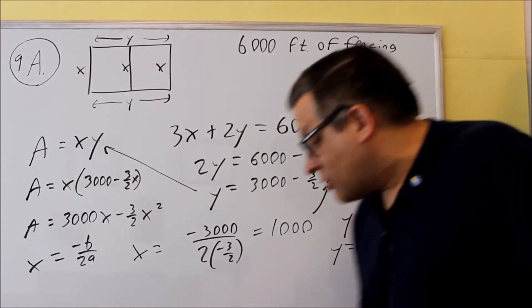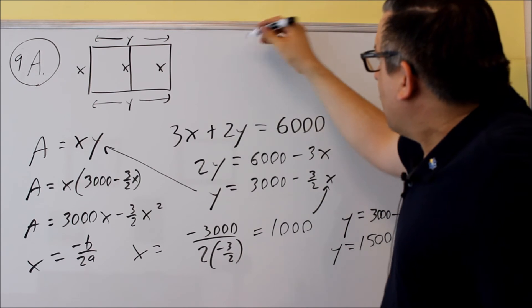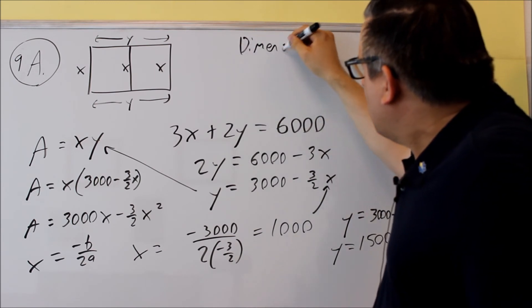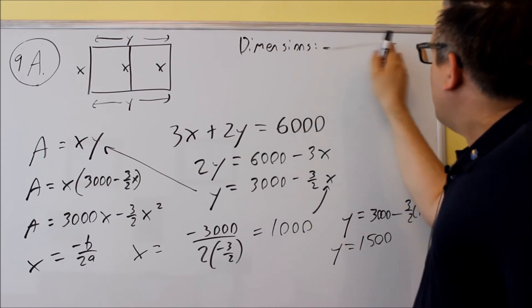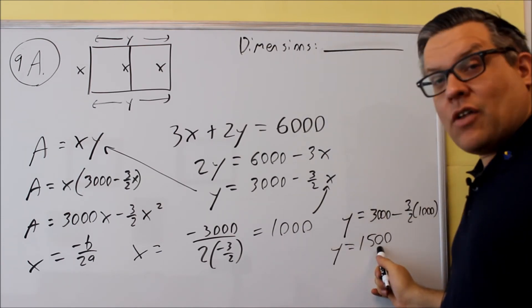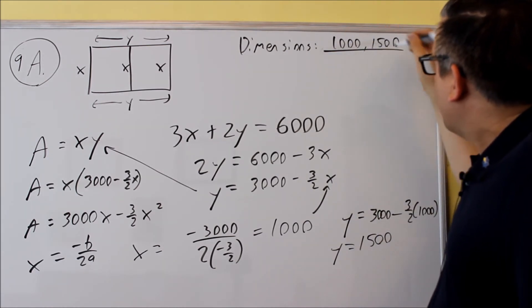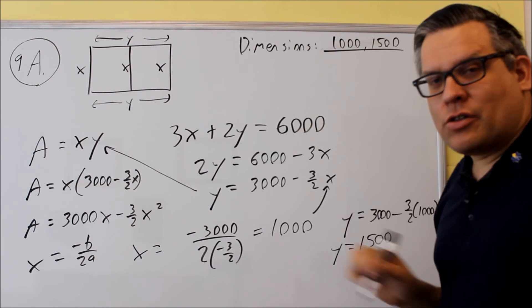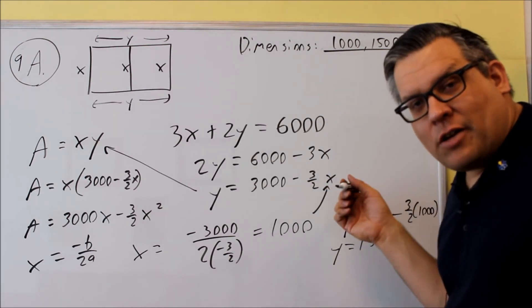So what I would put here for the answers: first it asks you for dimensions. Dimensions I would put 1,000 and 1,500. So I'm going to put 1,000 comma 1,500. You're going to separate them with a comma. It doesn't matter which one comes first. As long as we have both those numbers there, that's fine.